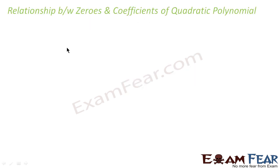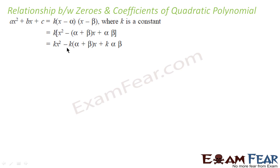Let's try to derive the relationship between zeros and coefficients from the quadratic polynomials. So this is my quadratic polynomial: Ax² + Bx + C. This is the quadratic polynomial because the highest power is 2, and A is non-zero. So the general form of a quadratic polynomial is Ax² + Bx + C.